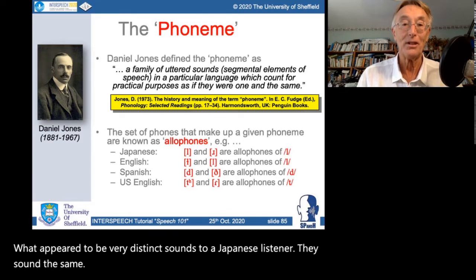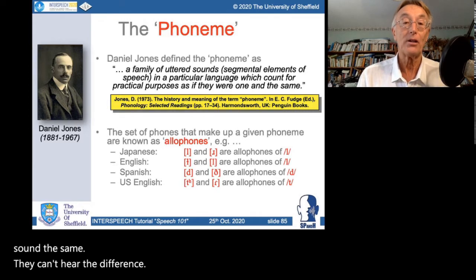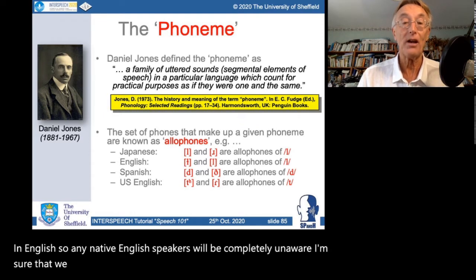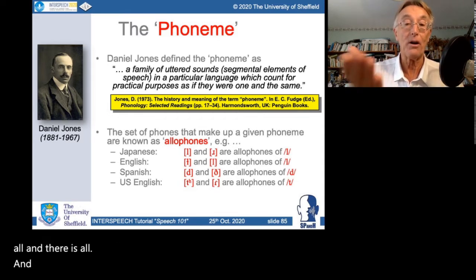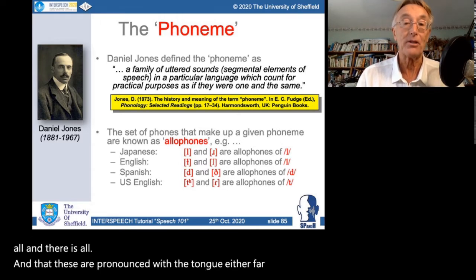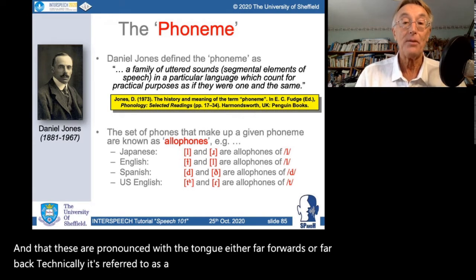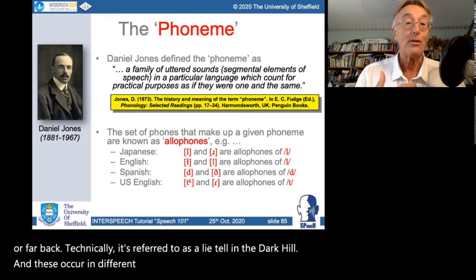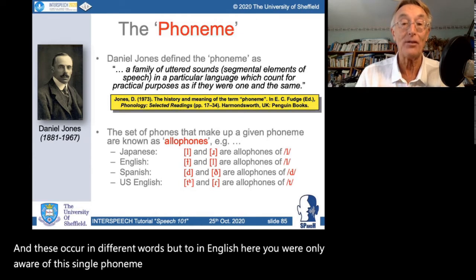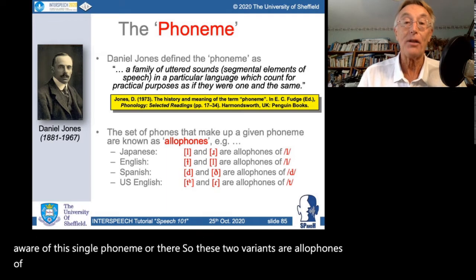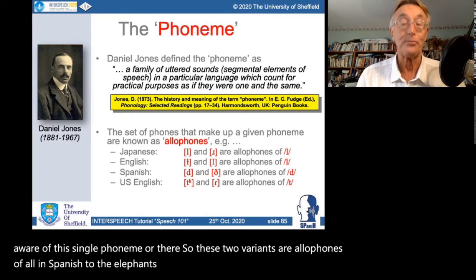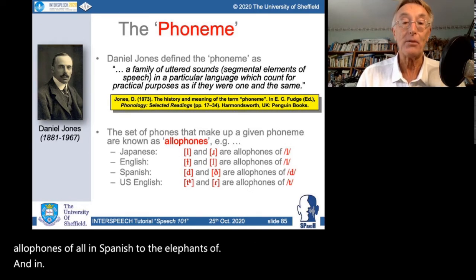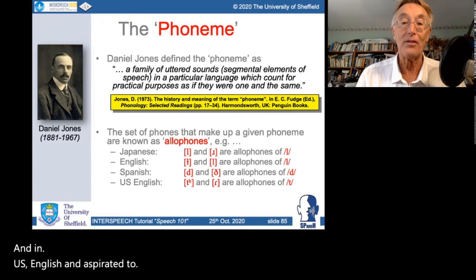In English, native speakers are completely unaware that we have two different ways of pronouncing an L sound — there is the 'light L' and the 'dark L', pronounced with the tongue either far forward or far back. These occur in different words, but to an English ear we're only aware of the single phoneme /l/. Similarly, in Spanish, D and TH are allophones of /d/, and in US English an aspirated T and a flap are allophones of /t/.